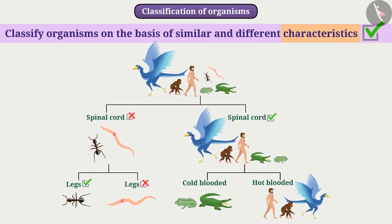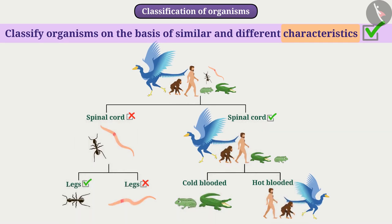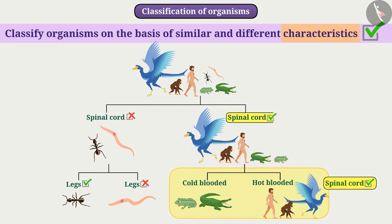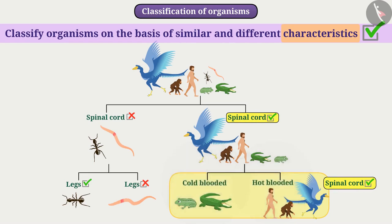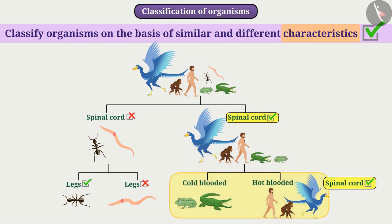In this way, groups of organisms can be classified into hierarchies. The next level of hierarchy has all the characteristics that are present in the previous level, but different groups of the same level differ from each other in at least one characteristic.